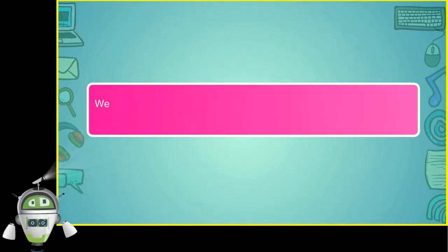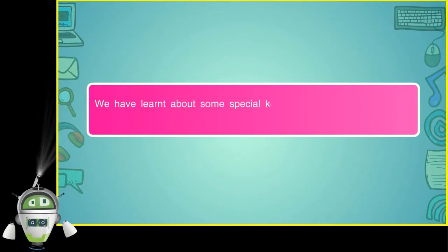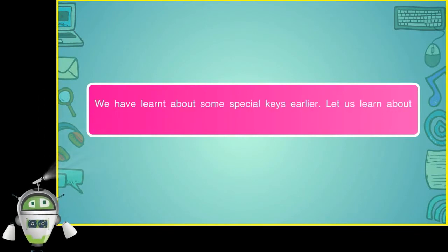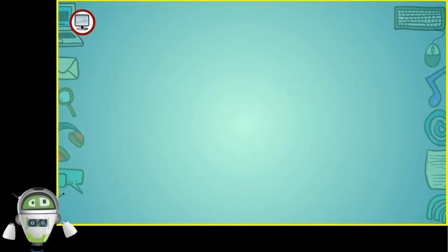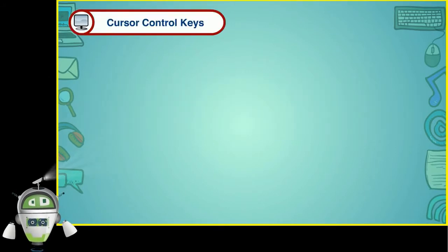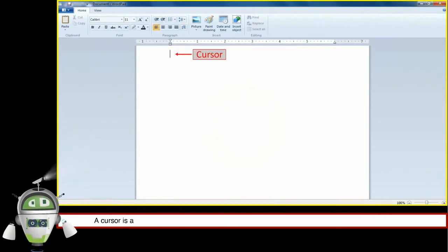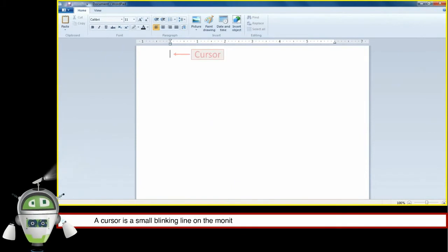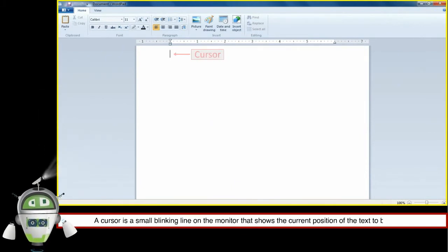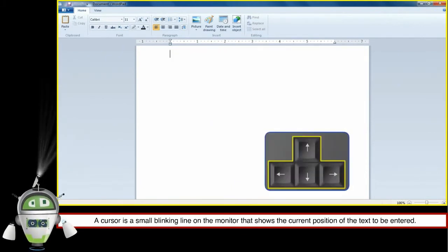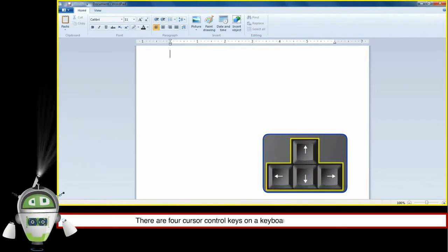We have learned about some special keys earlier. Let us learn about some more special keys. Cursor Control Keys: A cursor is a small blinking line on the monitor that shows the current position of the text to be entered. There are four cursor control keys on a keyboard.